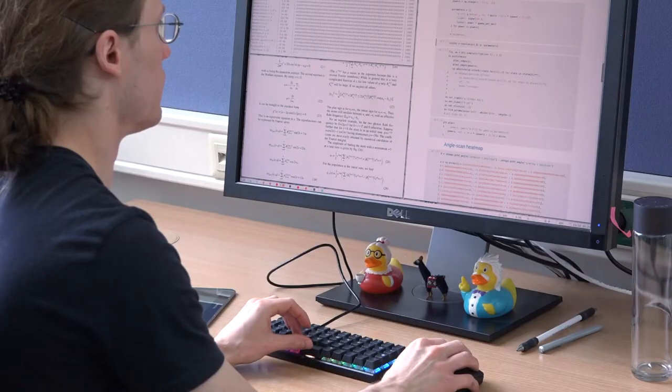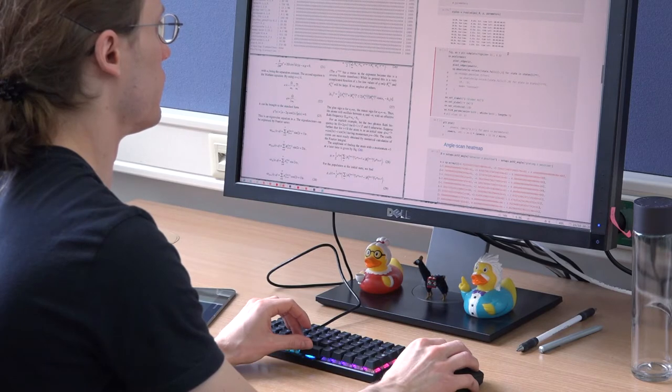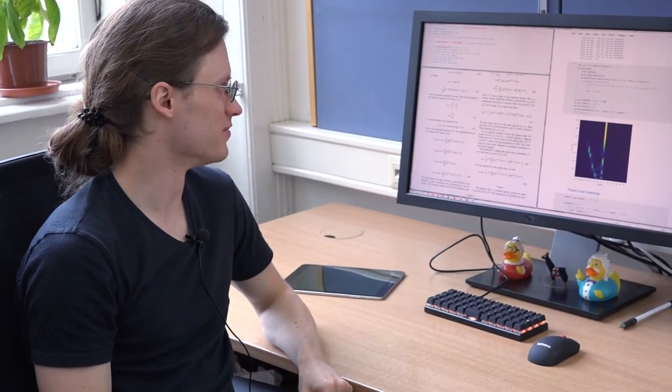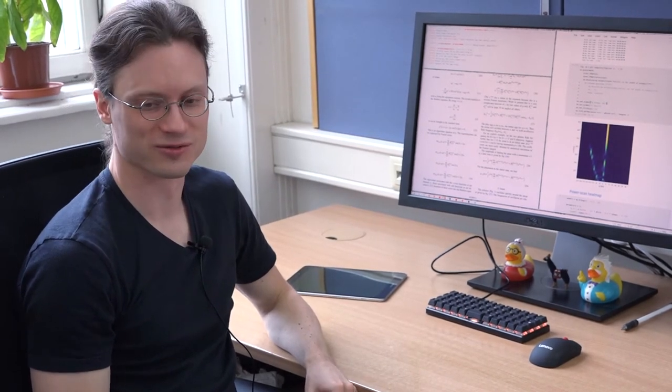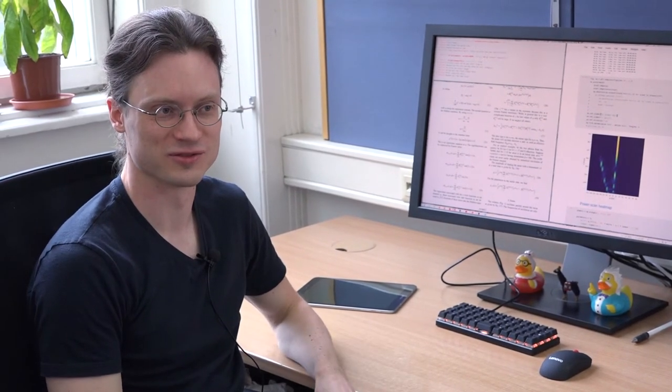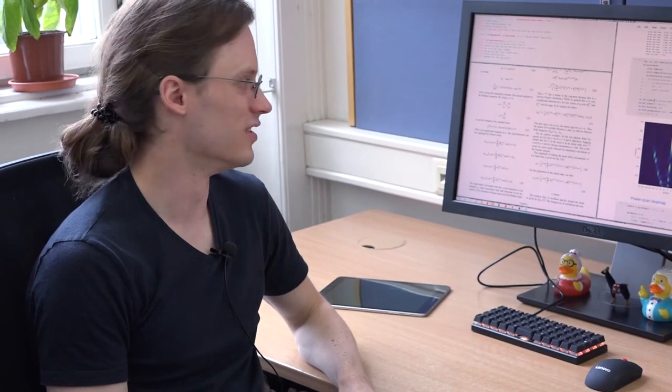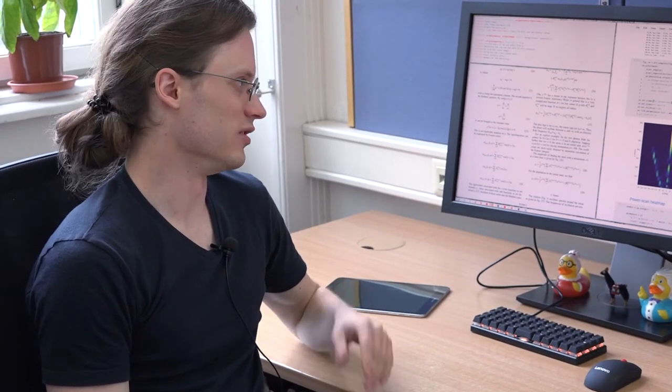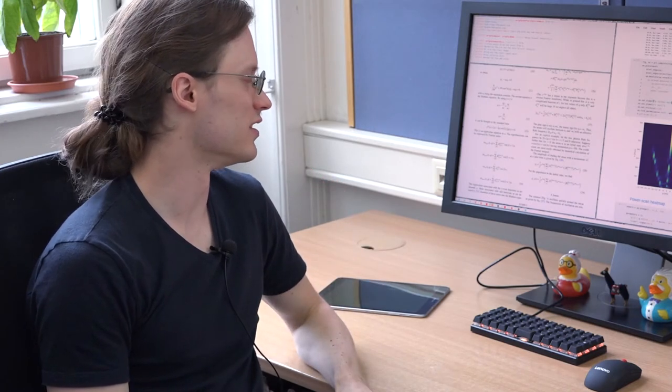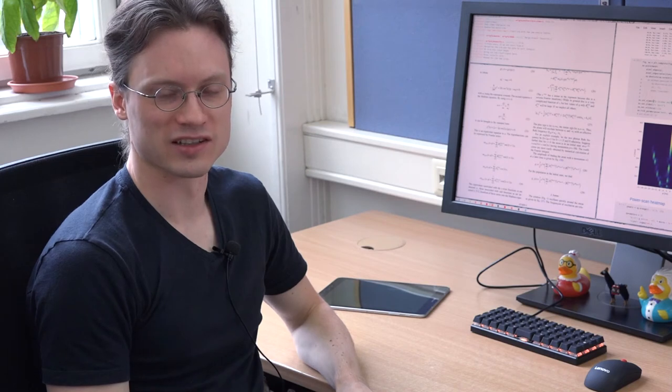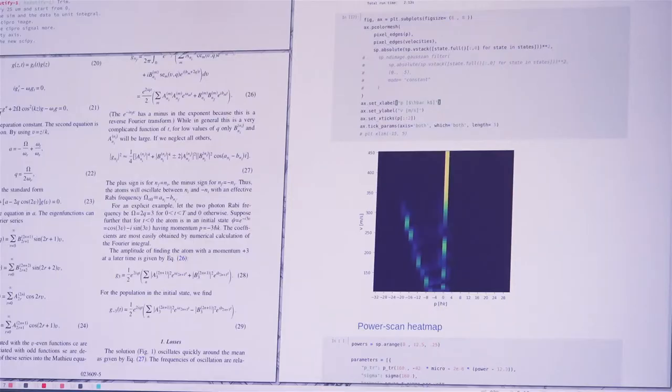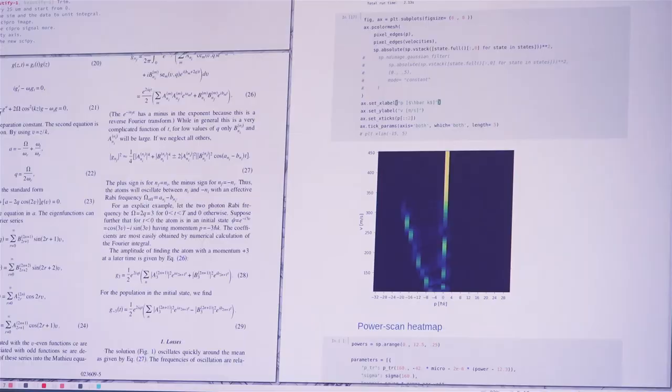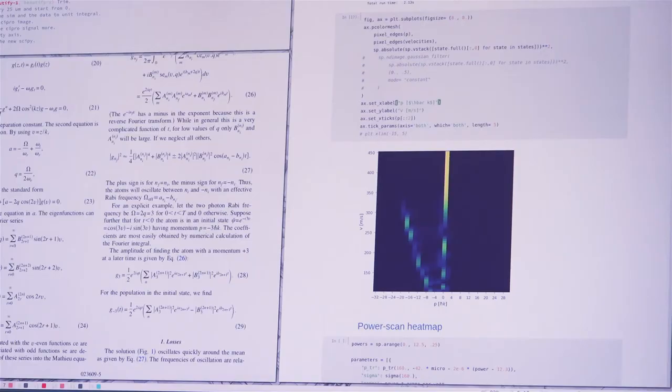All the experiments you've seen need careful preparation and analysis and for that we have our theory group. We are the theory subgroup and our main task is to create new interferometer concepts which try to jump ahead five, ten years into the future and figure out what we need to break new records. We make conceptual designs of new interferometers, simulate them and analyze the data from running experiments. Here we have a simulation of a new type of beam splitter for massive molecules based on Bragg diffraction and we simulate its efficiency and dependence on the illumination parameters.